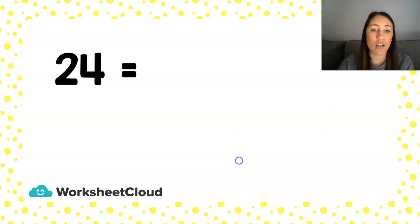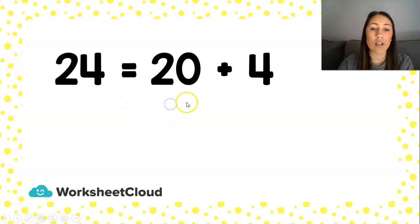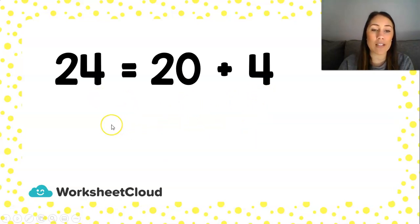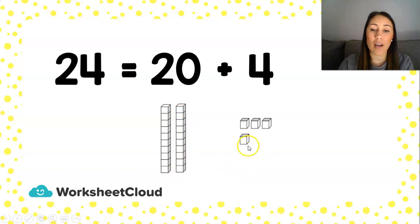Let's look at our first example. There are no hundreds in the number 24. 24 is a 20 plus a 4. If we draw it in blocks, we have two groups of 10 and we have 4 units.